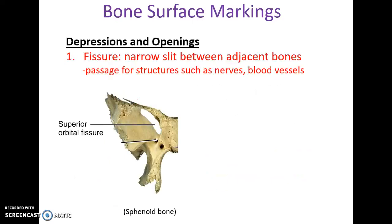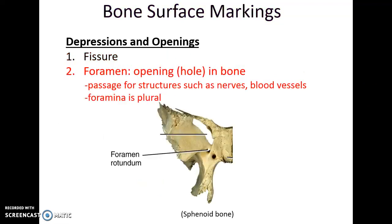Bones have various structural features. Fissures are long narrow slits between adjacent bones or within a bone that allow passage of structures such as nerves and blood vessels. A foramen is a hole — or foramina for more than one — just an opening to allow passage of structures.